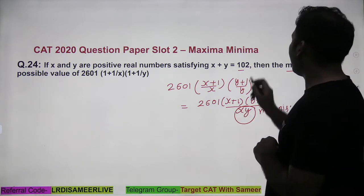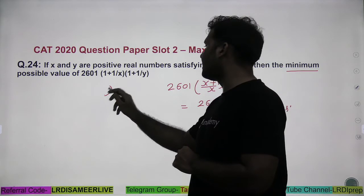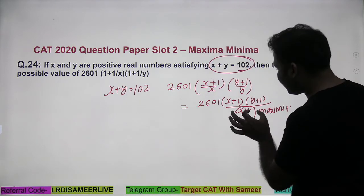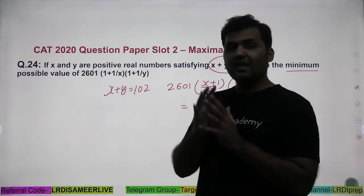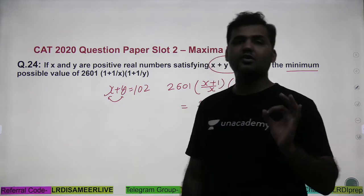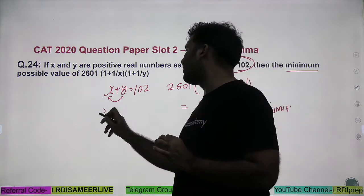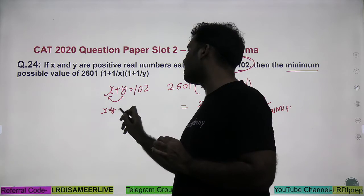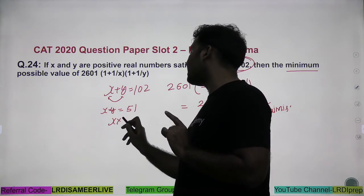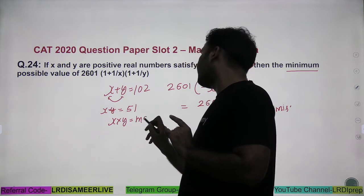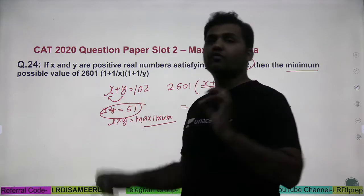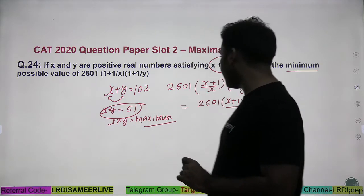Now, x plus y is 102. If x plus y is equal to 102 and I want to maximize the product of x and y, the product of x and y will be maximum when both x and y are as close as possible. When x and y are as close as possible, that means x should equal y, which equals 51. In that case, x into y will be at its maximum possible value.